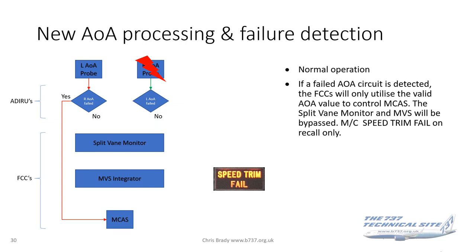If an alpha circuit failure is detected, the FCCs will only utilize the good angle of attack value for MCAS. With only one angle of attack value, the split-vane monitor and mid-value select are bypassed. MCAS has been programmed to still operate on a single angle of attack probe under these conditions only, as the chances of two independent failures are considered remote. The cross-FCC monitor will still be there, and in this case you'll get a master caution speed trim fail indication.